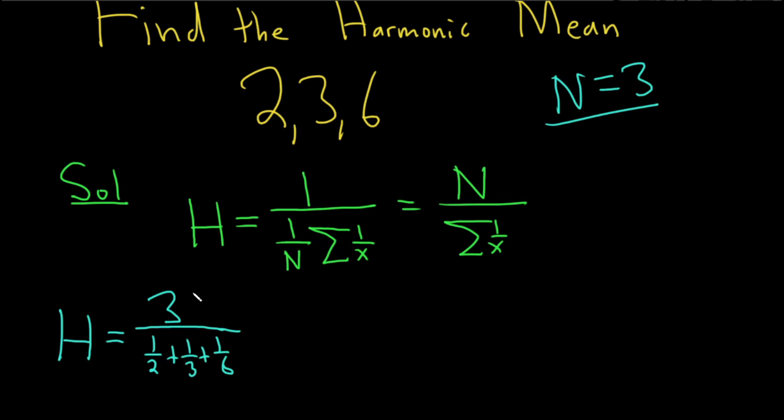So I'm going to put this in my calculator to see what we get. So 3 divided by, it's 1 half plus 1 third plus 1 sixth, and this ends up being 3. Really nice number. So we just get 3.